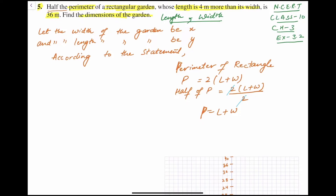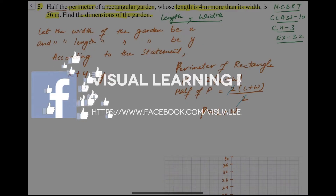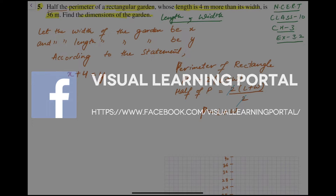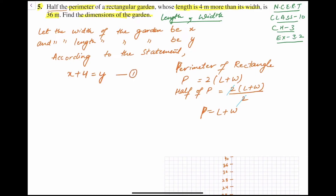Now according to the question, whose length is 4 more than its width. If length is y, then y = x + 4. So: x + 4 = y. This will be Equation Number 1. Next, x + y = 36, because the half perimeter given is 36 meters.